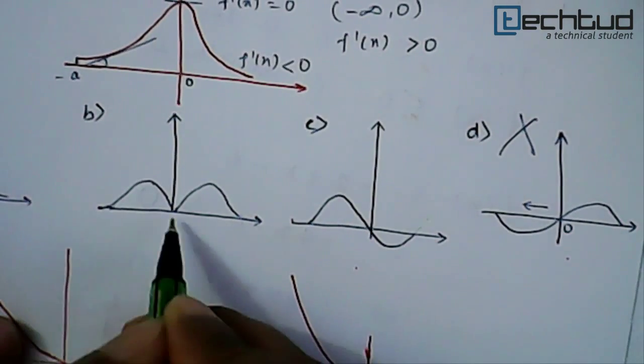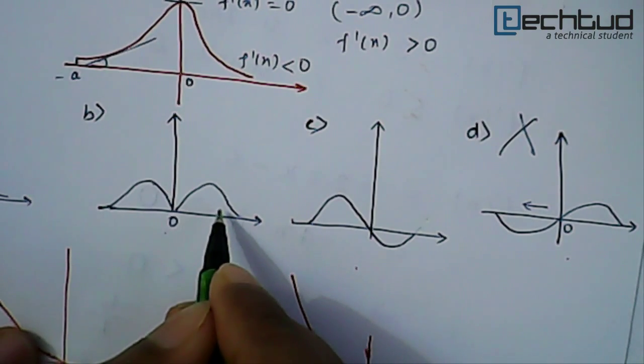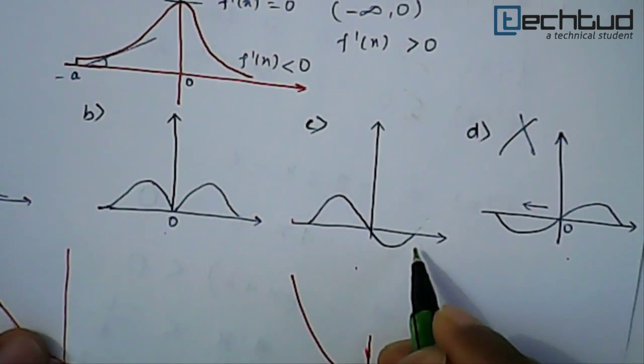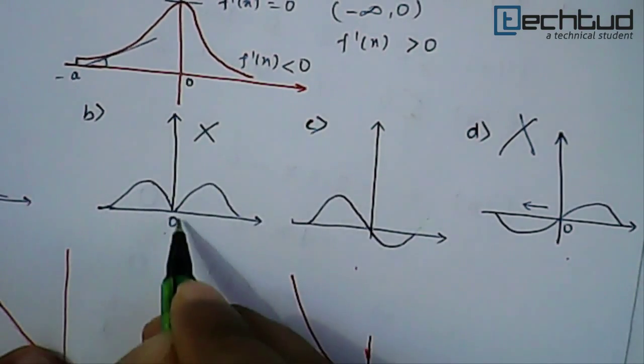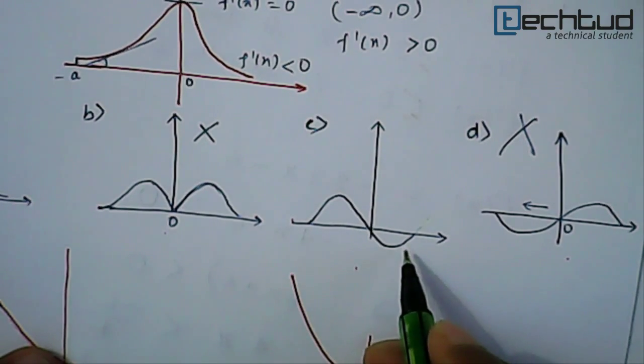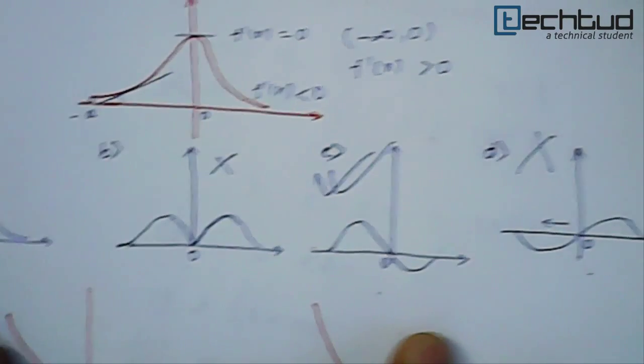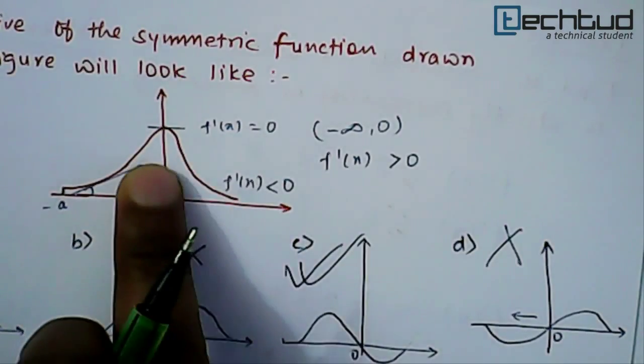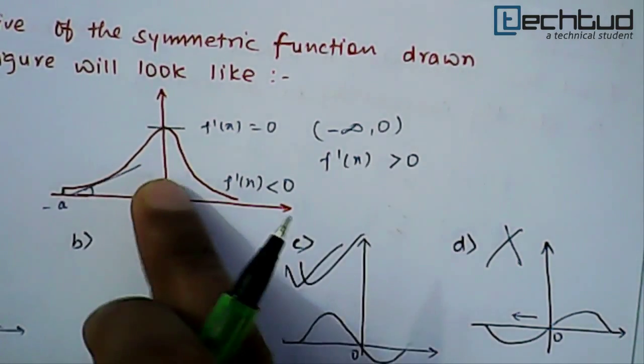So if you see after x equal to zero it should have negative value. So from zero it is here positive value. Here it is negative value. It means that this is wrong because here it is having positive value. In this curve only it is negative after zero. So this curve is satisfying all the conditions, possible conditions. And this is the possible curve of the derivative of the above given curve.